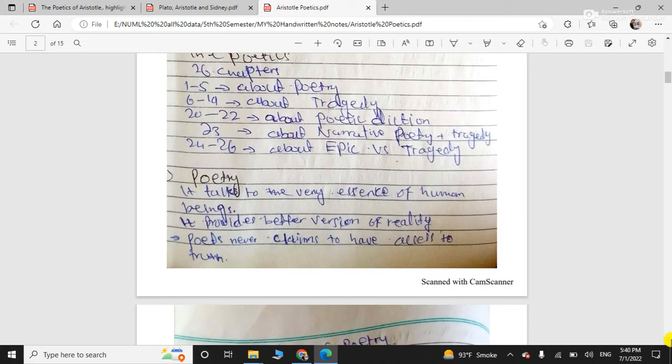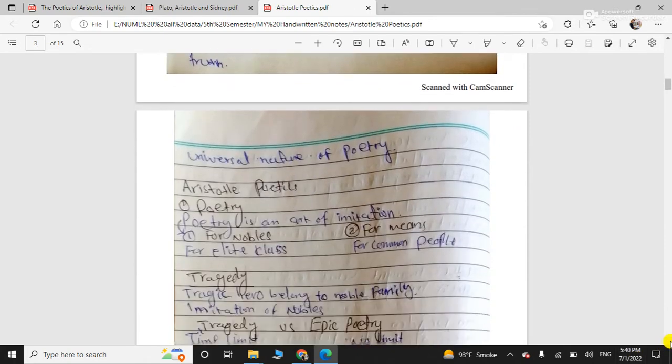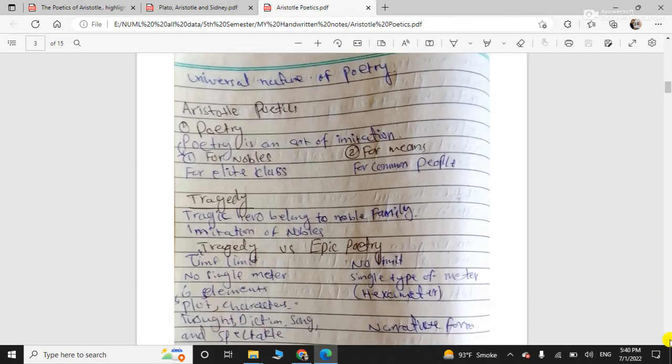So let's begin. He says that poetry talks to the very essence of his views regarding poetry, Aristotle's views regarding poetry. He says that poetry talks to the very essence of human beings. It provides better version of reality. Poets never claimed to have access to truth. And then he declared that the universal nature of poetry. Poetry is something universal.